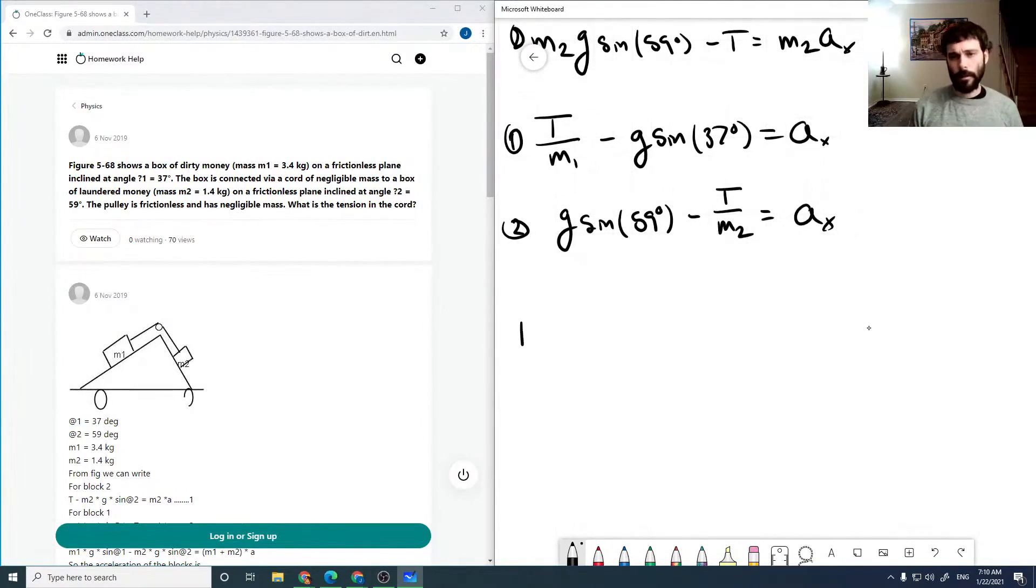If we subtract, we're going to have T times 1 over m1 plus 1 over m2 minus g times sine 37 degrees plus sine of 59 degrees, and that will equal zero because a x minus a x will give us zero. So then we can solve for tension by rearranging this.